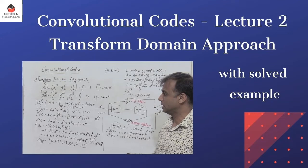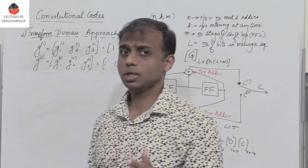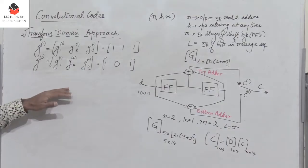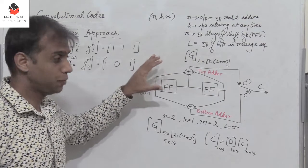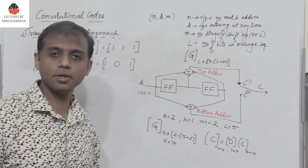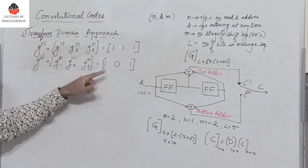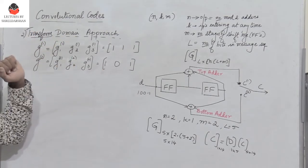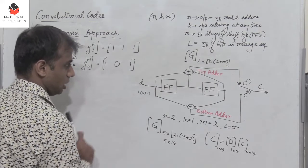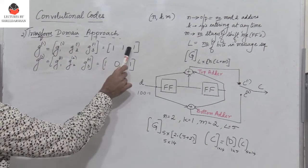Hello friends. In the previous video segment we began with convolutional codes, and we were trying to find the output of a convolutional encoder using the time domain approach. For the same problem I have got the generator matrix and we also found the output using the time domain approach. Here in this lecture we should find the output using the transform domain approach. In the time domain approach we defined G1 and G2 which were 111 and 101.